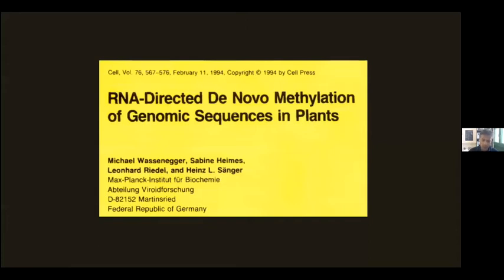I would like to remind especially the in-depth audiences here that this is the first system where RNA-directed DNA methylation (RDDM) had been identified in plants. It's a seminal paper in 1994 in Cell, where RDDM for viroid-related sequences by viroid infectivity was shown.